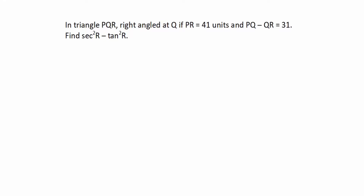Hi friends, welcome to my channel Excellent Ideas in Education. Today we are going to learn about trigonometric problems. This is a board exam problem. In triangle PQR, right angle at Q, if PR is equal to 41 units and PQ minus QR is equal to 31, find secant square R minus tan square R.